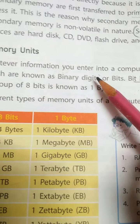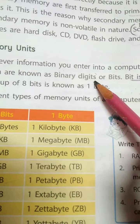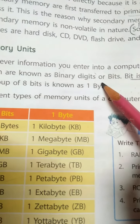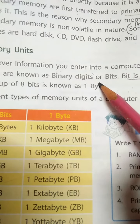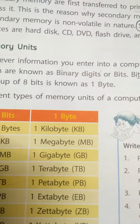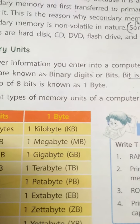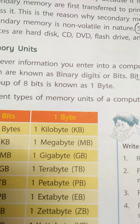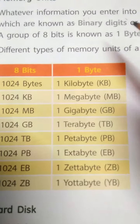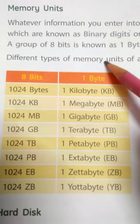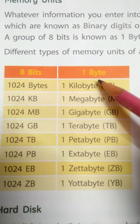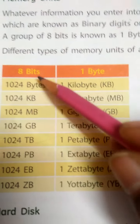Bit is the smallest unit of computer memory. It is stored in the form of zeros and ones, which are known as binary digits or bits. A group of 8 bits is known as one byte. So, 8 bits is equal to one byte.